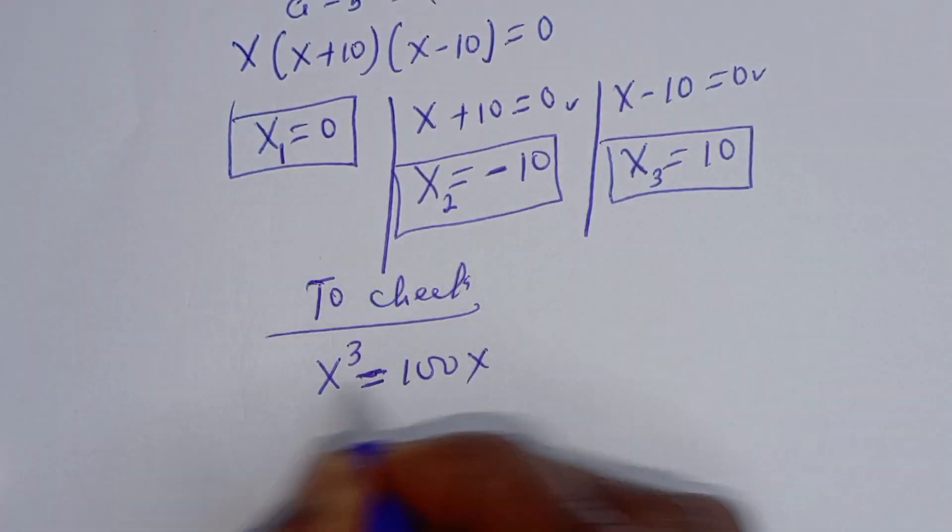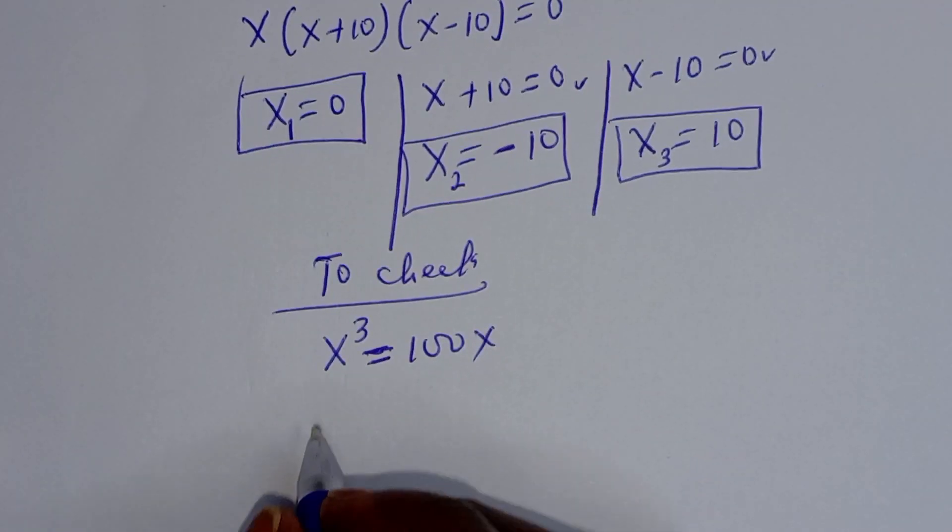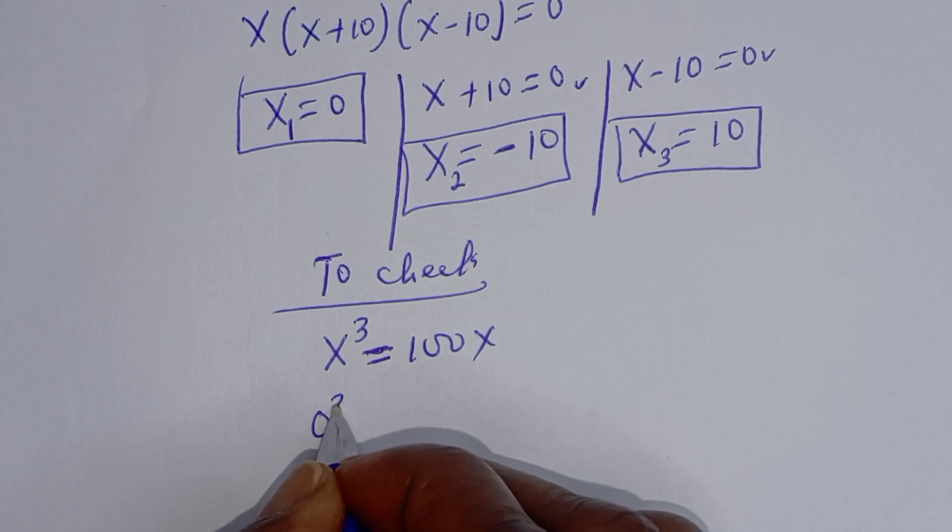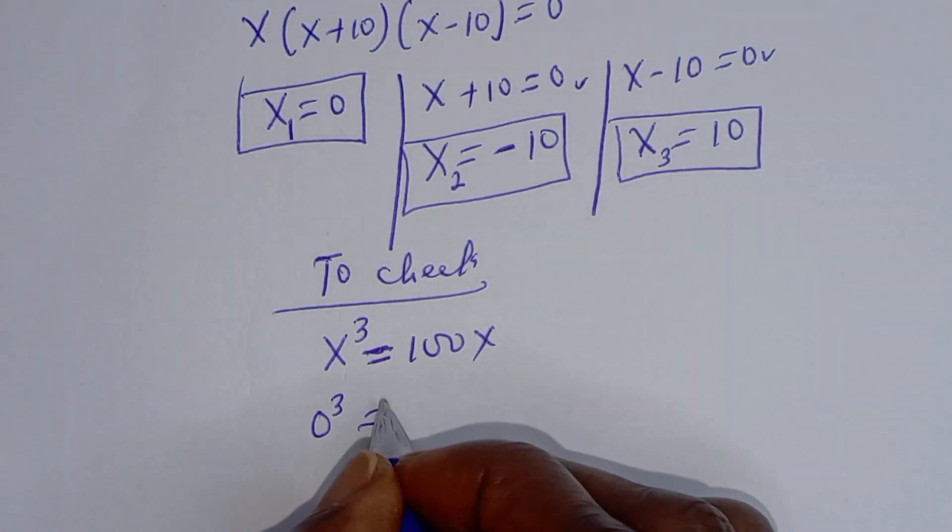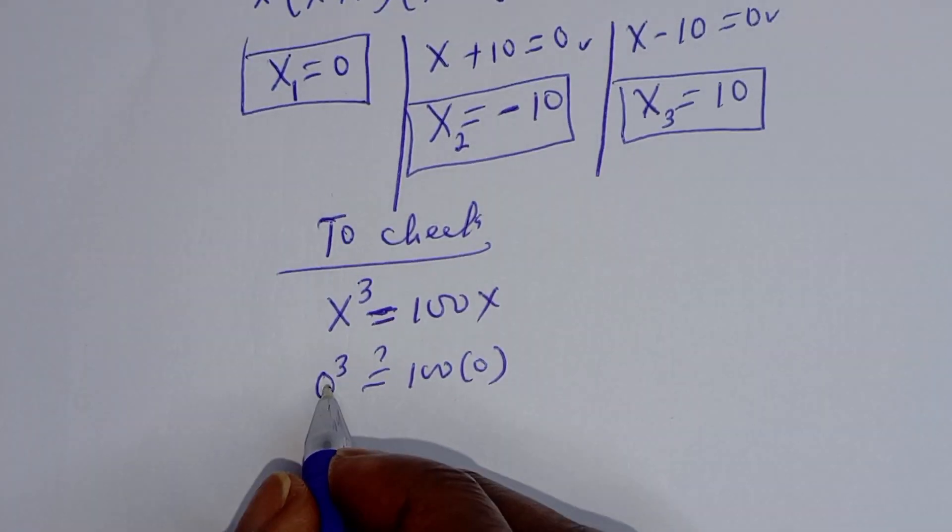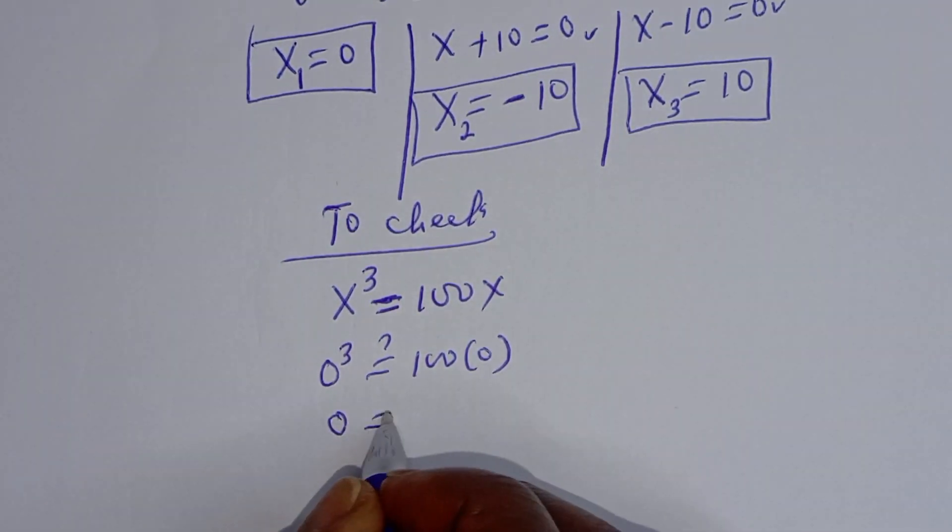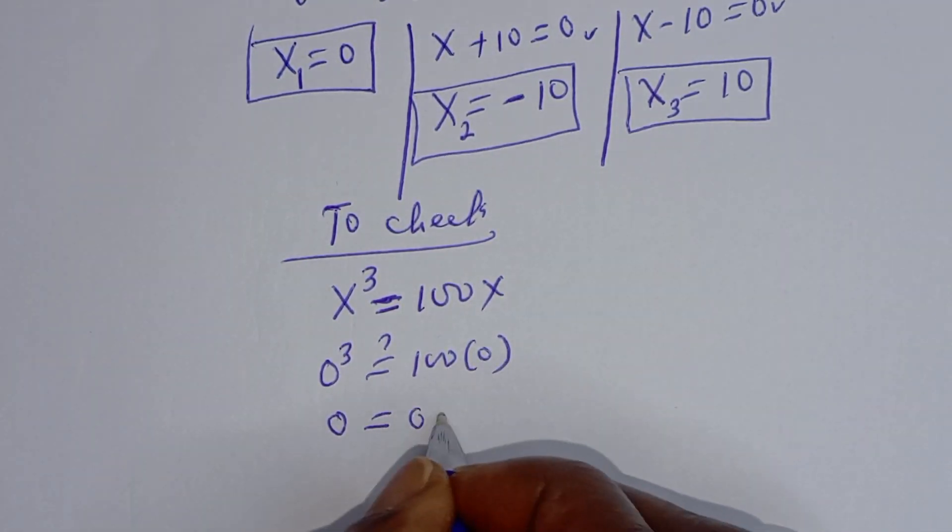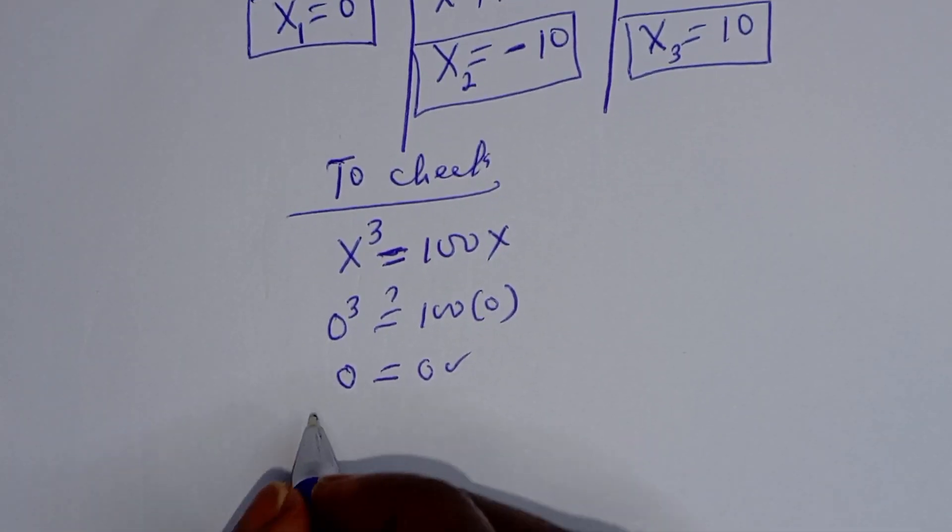Now to confirm when x is equal to 0, we have 0 raised to power 3 must be equal to 100 bracket 0. Then 0 raised to power 3, this is 0, which is equal to 100 times 0, which is true.